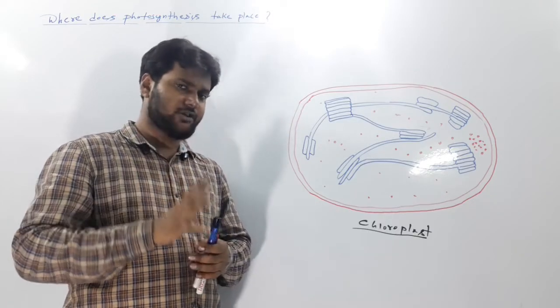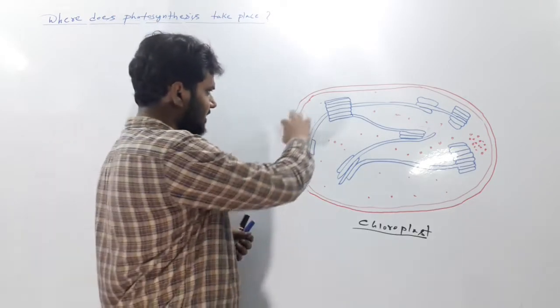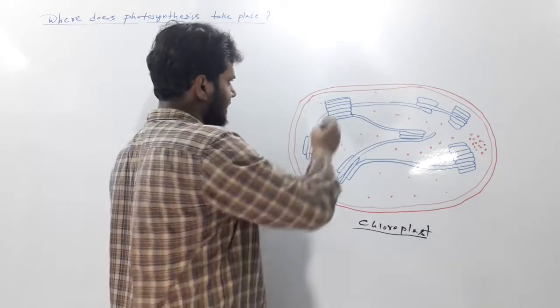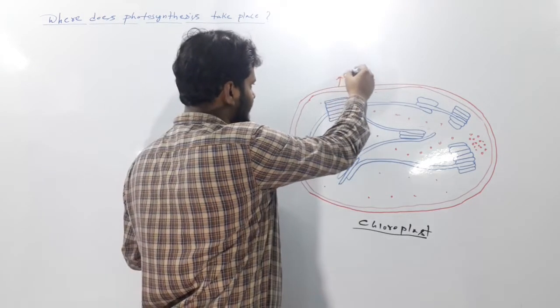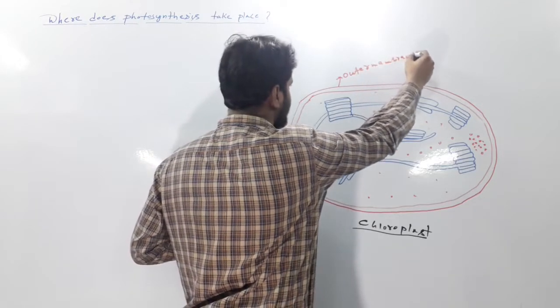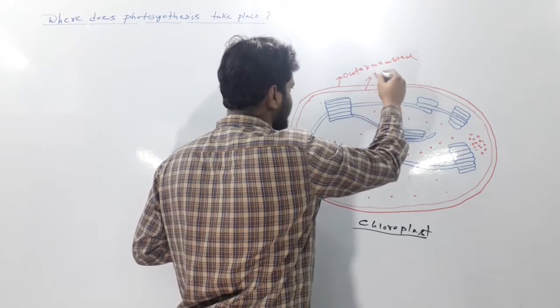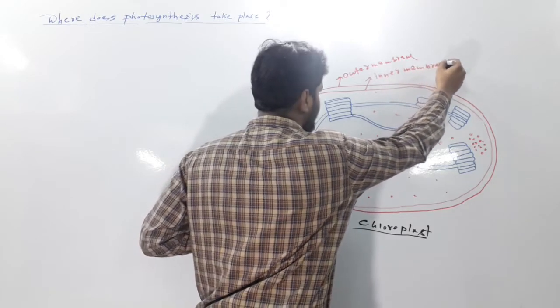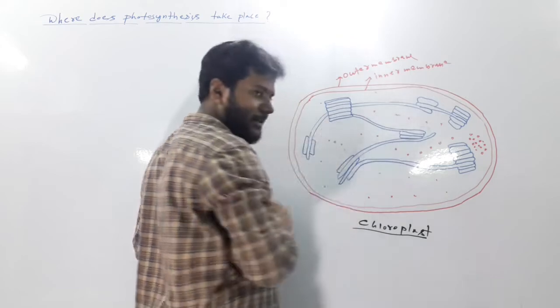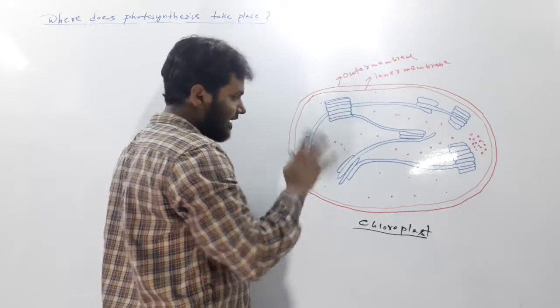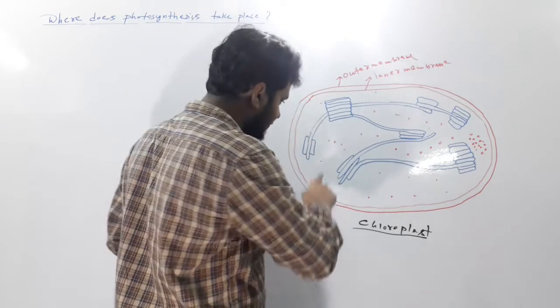You have studied the structure of chloroplast. This is one simplified structure of chloroplast. It has two membranes - this is outer membrane, this is inner membrane. And inside this membrane there are two structures: one is membranous and another one is stroma, the matrix.